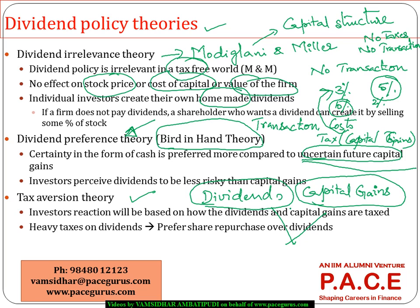The tax aversion theory brings out the fact that a company's dividend policy should be aligned with the prevailing taxation policy. Based on all three theories, the general conclusion is: higher tax rates lead to lower preference for dividends, with investors preferring capital retention. Conversely, when dividend taxes decrease, the demand for immediate and large dividend payouts tends to pick up.